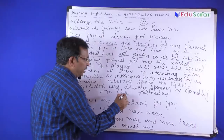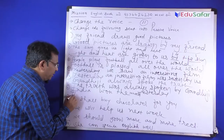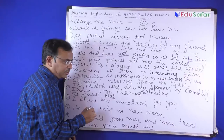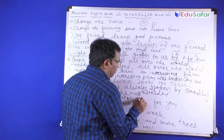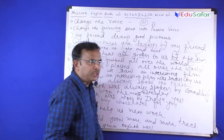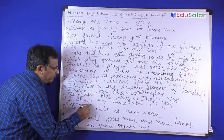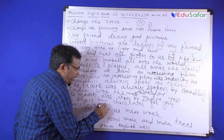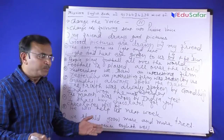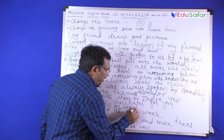India won the match yesterday. The match was won by India yesterday. I shall buy chocolates for you — chocolates, C-H-O-C-O-L-A-T-E-S. In future tense, to be form will be 'will be'. Chocolates will be bought by me for you.